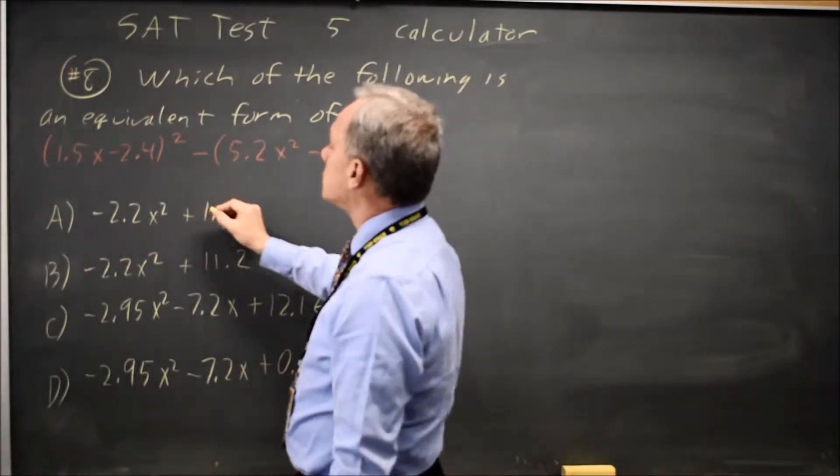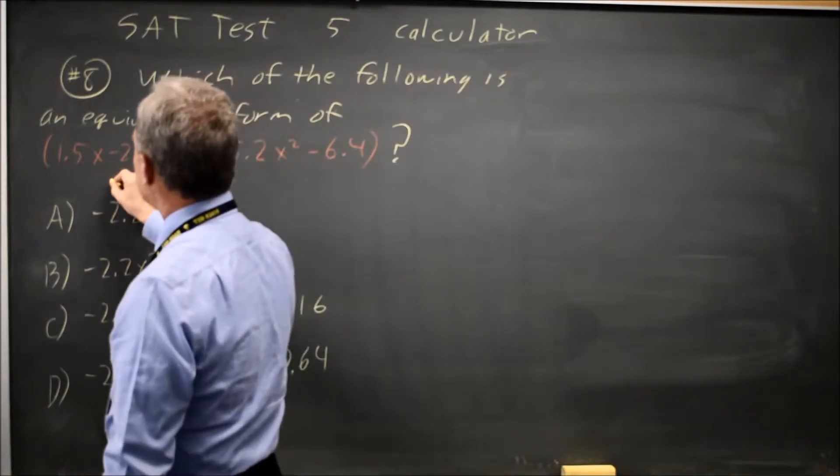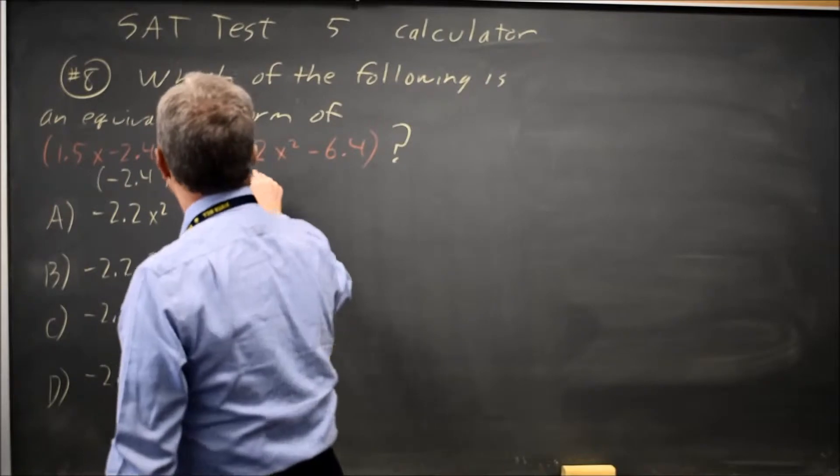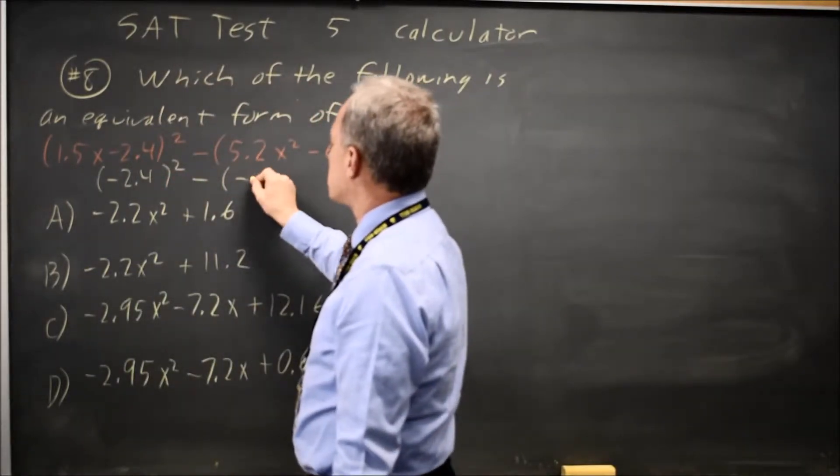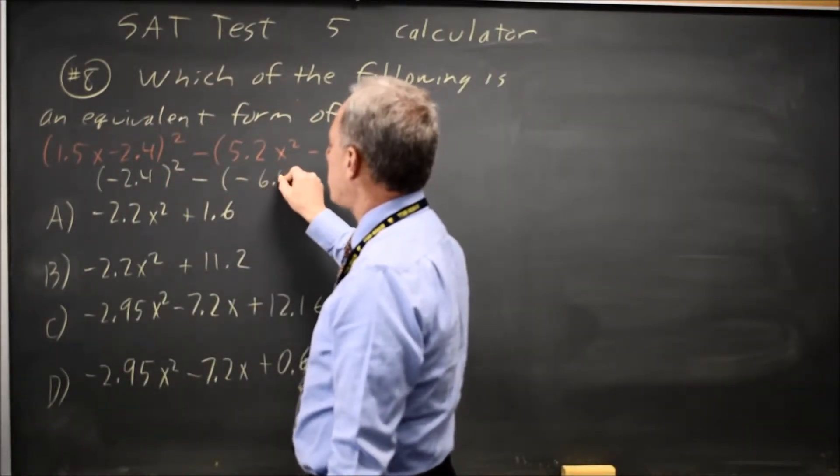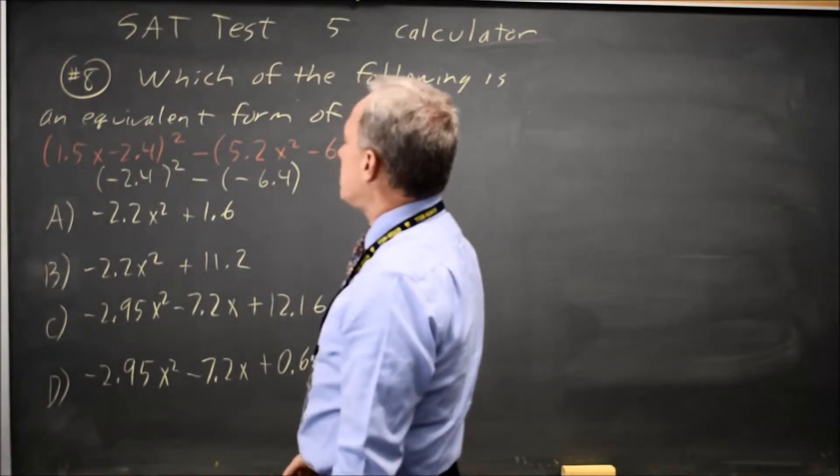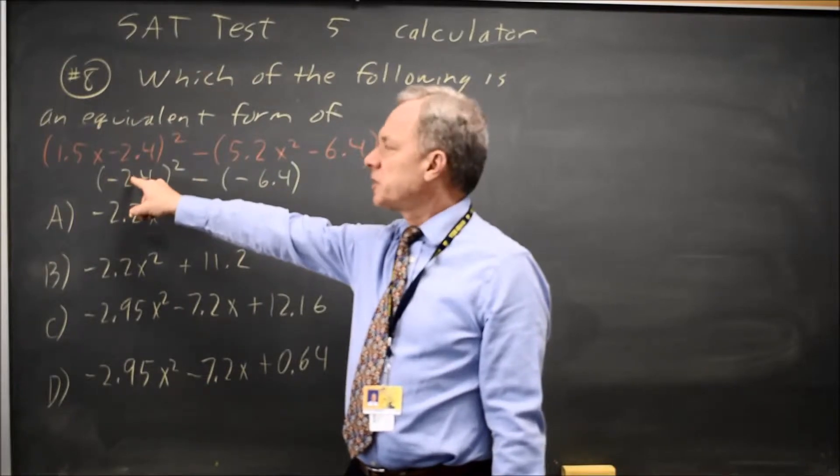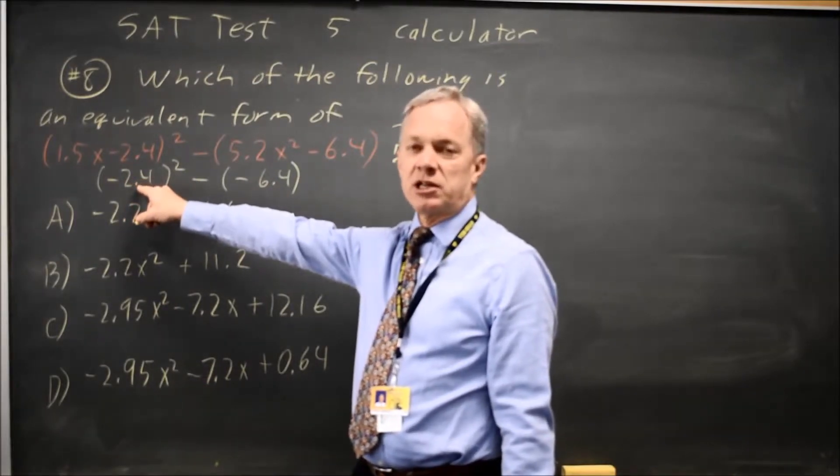At x equals 0, this first expression is 0 minus 2.4 is negative 2.4, squared, and then minus 0 squared is 0, so this is just minus negative 6.4. If I enter that into my calculator, making sure I put parentheses around the negative, because when I square this negative number, I should get a positive.